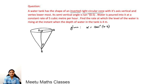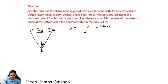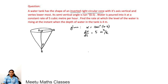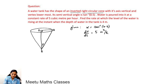Water is being poured into this tank at 5 m³ per hour, so the volume of water in the tank is increasing at this rate. The rate of change of volume dV/dt = 5 m³ per hour. We have to find the rate at which the level of water is rising — that is, how fast the height is increasing — at the instant when the depth of water in the tank is 4 meters.